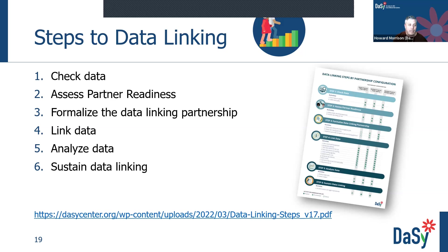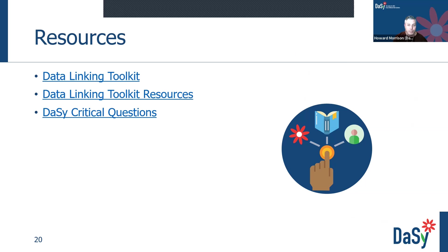A few resources to highlight include the link to the toolkit, the resources direct link, and the link to the critical questions. The resources include the data partnerships and benefits infographic, a handout for transitions and child outcomes, the partnership configuration infographic, an assessing partner readiness packet, a packet to formalize the data linking partnership, a worksheet for data analysis and dissemination plan, and a sustaining data linking checklist.